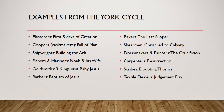Here are some examples from the York cycle of the guilds and the plays they performed. The plasterers — people who build things — did the first five days of creation. That makes sense. The coopers, who made wooden casks, did the fall of man — perhaps a dark connection there. The shipwrights did the building of the ark — makes sense. Fishers and mariners did the story of Noah and his wife. The goldsmiths do the story of the three kings visiting baby Jesus because, of course, gold was one of the gifts they brought.